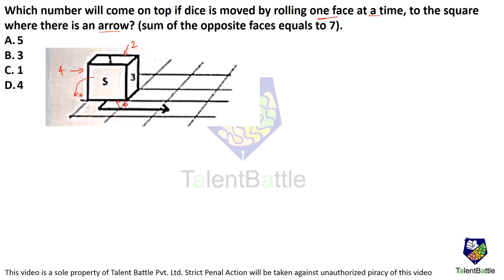When you roll the dice like this, 5 is going to go at the bottom and 2 is going to come on top. So 3 is going to remain. I'll draw the cube here just to give an idea. 3 remains as it is, 5 goes to the bottom, 2 comes to the top, 4 remains, 1 comes over here, and 6 which was at the bottom is going to come on the side. Now it is going to roll down like this.